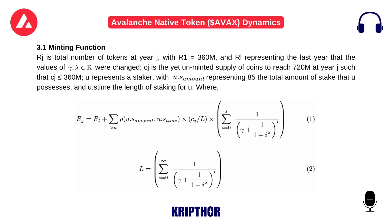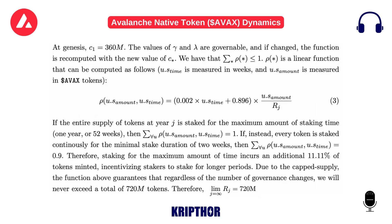Section 3.1: Minting Function. R_J is the total number of tokens at year J, with R_1 equals 360M, and R_L representing the last year that the values of V, H, and Sigma_R were changed. C_J is the yet-unminted supply of coins to reach 720M at year J, such that C_J is less than or equal to 360M. U represents a staker, with U.SAMOUNT representing the total amount of stake that U possesses, and U.STIME the length of staking for U. At Genesis, C_1 equals 360M. The values of A and N are governable, and if changed, the function is re-computed with the new value of C*. We have that E* and P* are less than or equal to 1. P* is a linear function; U.STIME is measured in weeks and U.SAMOUNT is measured in AVAX tokens.